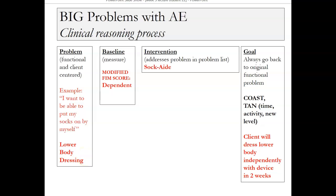Let's say the problem with this person — he wants to get his socks on by himself. That's meaningful to him, that's what he needs to do. So the problem, just one item in what's usually a list of problems, is lower body dressing. How do we measure that? We use our cheat sheets. We're watching the videos, seeing the score of this person, how much help they need. Let's say they're dependent. What's the intervention? We're going to give him a sock aid — we think he'll be able to do it. And then the goal goes right back to the problem: client will dress lower body independently with a device using modified FIM language in two weeks. He'll be able to get his socks on, since he can already do his pants, underwear, and shoes — it's just those socks.